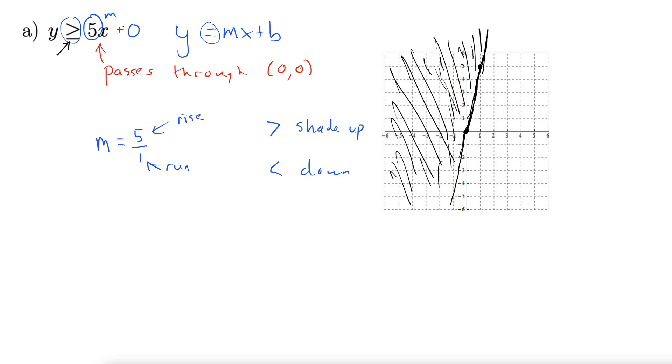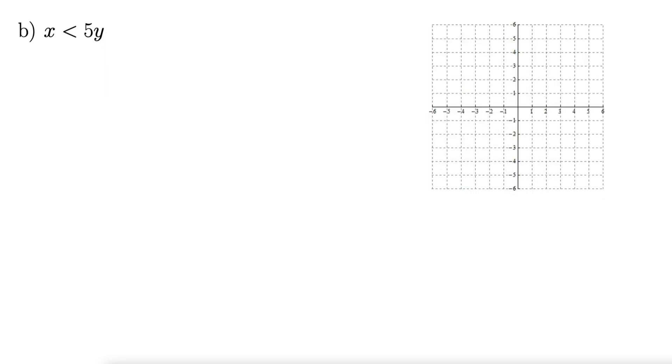And if this was greater than, but not equal to, this would be a dashed line. There we go. Let's try another one of these. For this example, we have x is less than 5y.